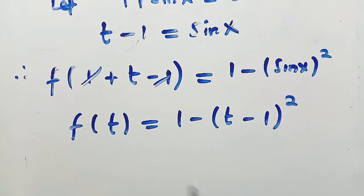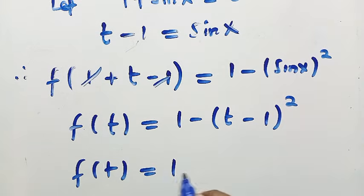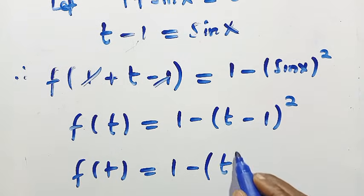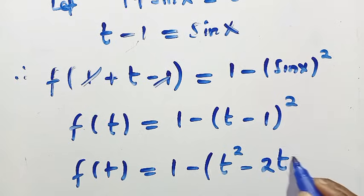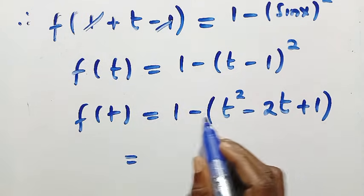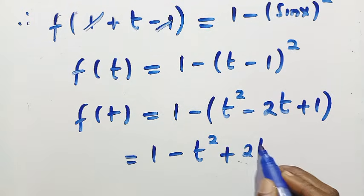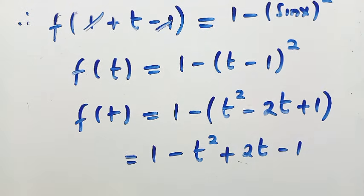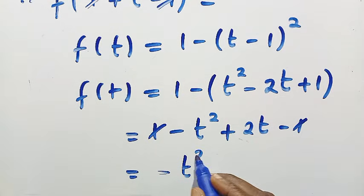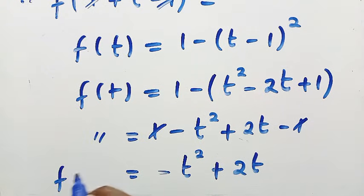Here we have 1 minus 1 cancelled, so we have f(t) equals 1 minus sin x, which is also given as (t - 1)². We will proceed by expanding (t - 1)². Here we have 1 minus (t - 1)². When we multiply it two times, we get t² - 2t + 1. We open this with negative.